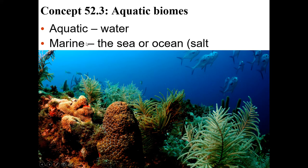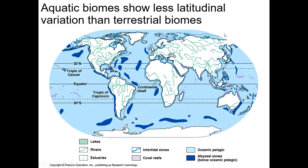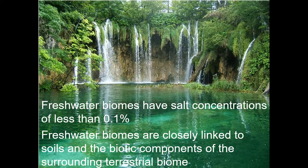For aquatic biomes, know that aquatic means water, and marine means salt water — sea or ocean. Aquatic biomes don't have as much temperature variation as terrestrial biomes because water has a high specific heat, meaning it takes a lot of energy to change its temperature.